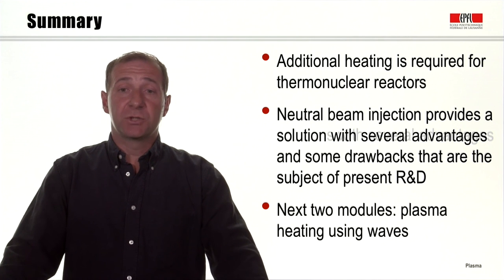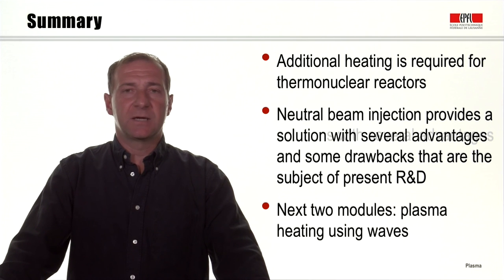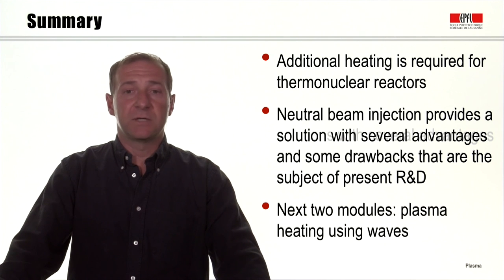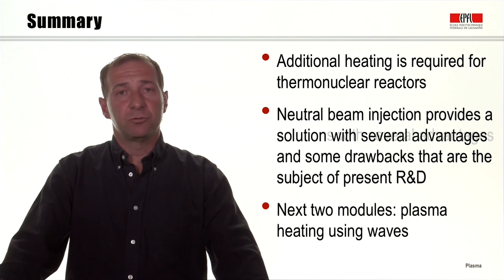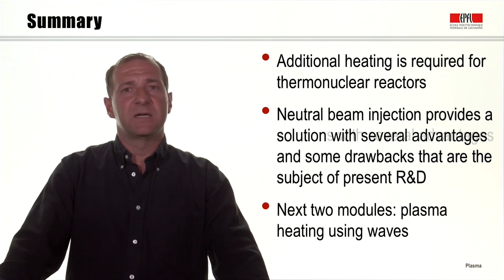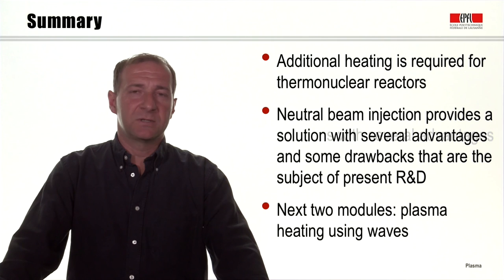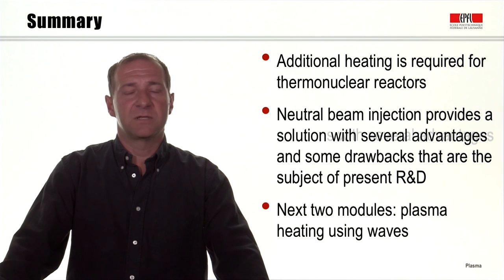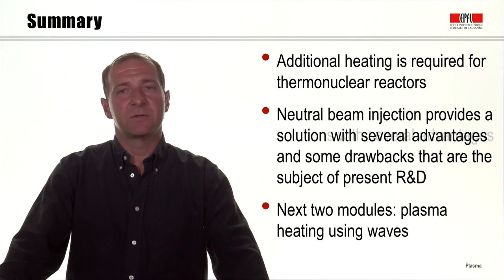In summary, we have seen that additional heating is required for thermonuclear reactors — heating on top of ohmic heating, which results from electrical current flowing through the plasma. The first system investigated today was the neutral beam injector, which provides a solution with a number of advantages but also some drawbacks, although ongoing R&D is working to overcome those drawbacks. In the next two modules, we will investigate how we can heat the plasma using plasma waves at different frequencies.